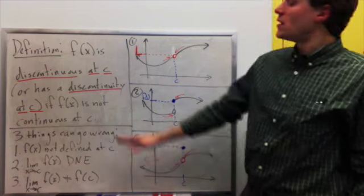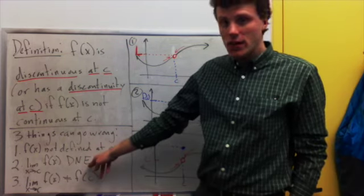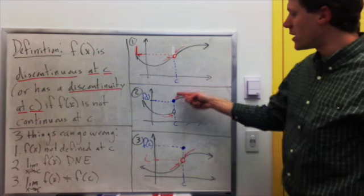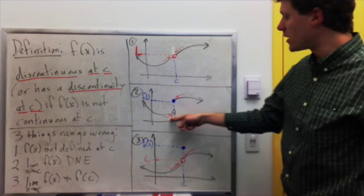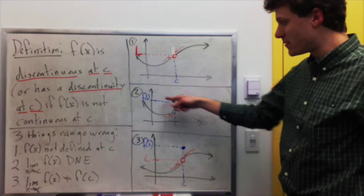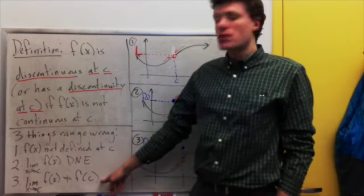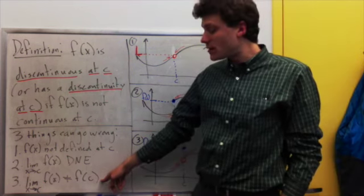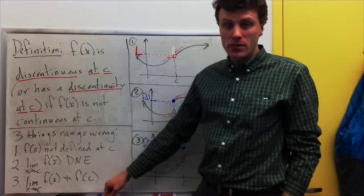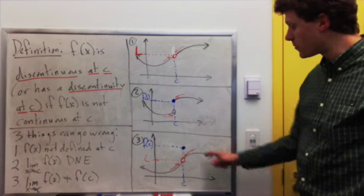Second, the limit might not exist at c. In this picture, I've drawn it so that the limit does not exist at c, even though the value of the function is defined at c. Finally, the function might be defined at c and the limit might exist, but they might not be equal to each other, which is what I'm illustrating in this picture.